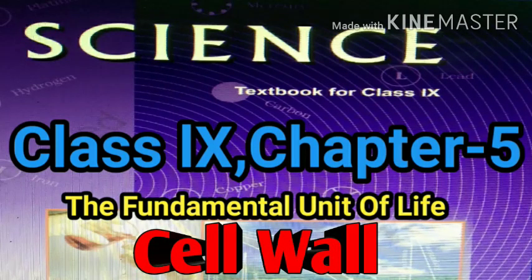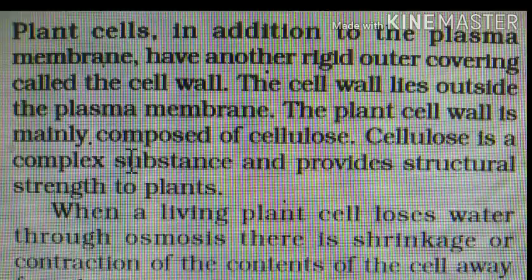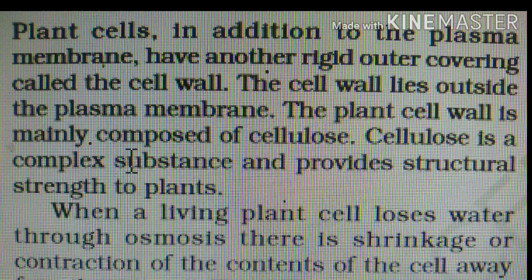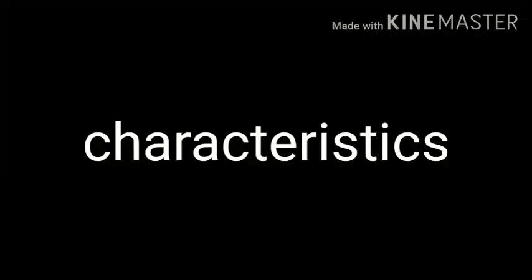We have to know first what is cell wall. Before knowing the definition, we have to remember that only the plant cells have cell wall. No animal cells have cell wall. Then the question arises, what is called cell wall? Cell wall is a structural layer surrounding some types of cells just outside the cell membrane. Mainly it is present in the plant cell.